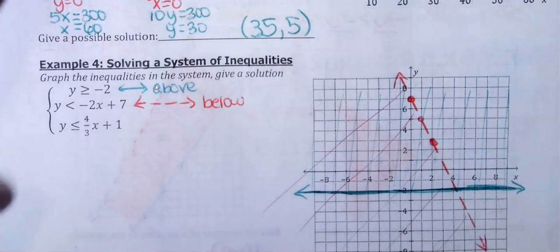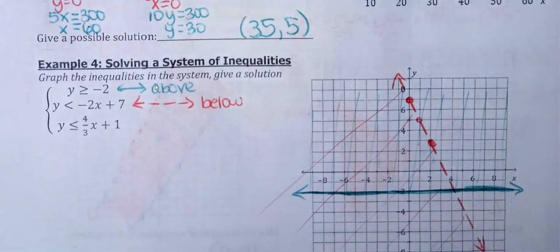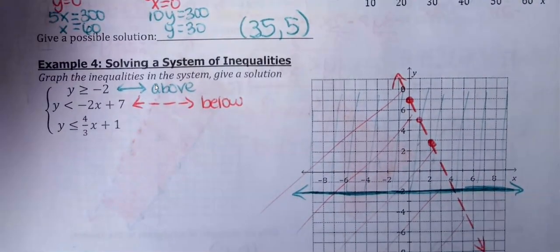And at this point, the overlap would be in between here. I got one more inequality though, and I'm just realizing I need a different color pen. Okay, we'll use this one.